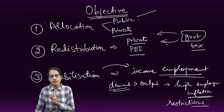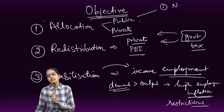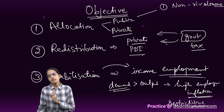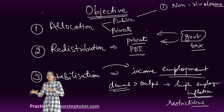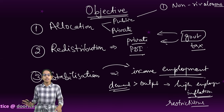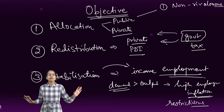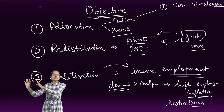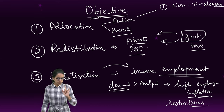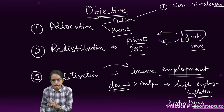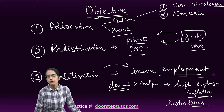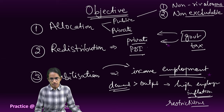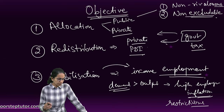Public goods have two important characteristics. First, they are non-rivalrous. With private goods, if I own a car, my friend would also want a car — there is rivalry. But there is no rivalry with public goods. I take enough air to breathe; my friend also takes enough air to breathe. So public goods are non-rivalrous. The second characteristic is that they are non-excludable.